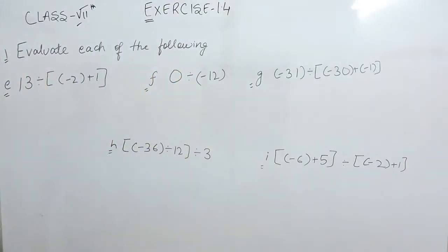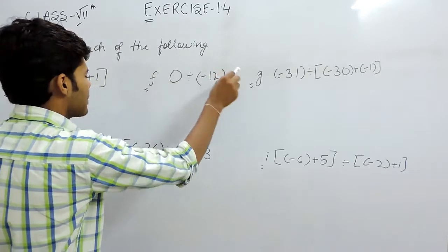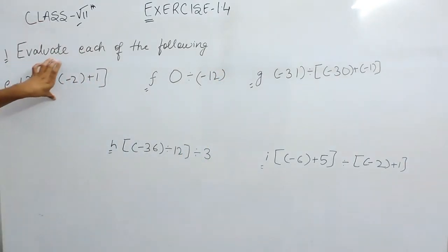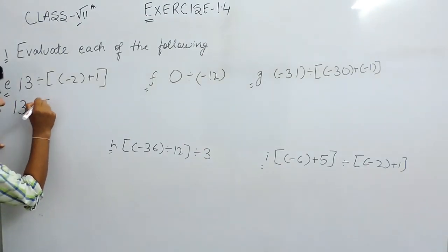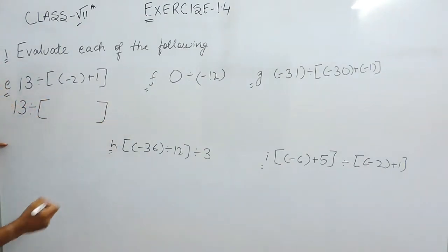Hello students, now let's solve the remaining parts of question number 1 and I already told you before that we'll use BODMAS wherever it is applicable. So here the bracket is present. First of all, according to BODMAS we do the bracket, means we solve the bracket first. So 13 and divided sign will be remaining as it is. We'll solve the bracket first.